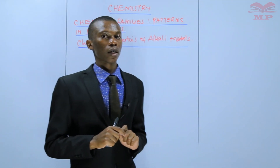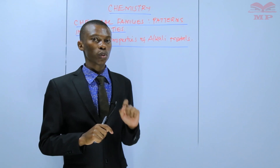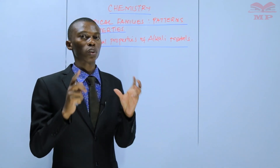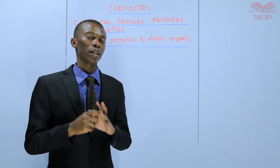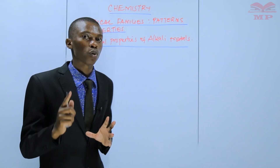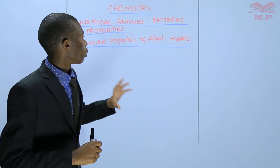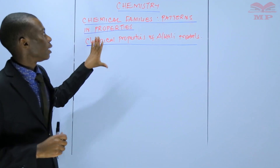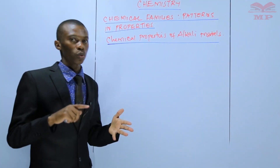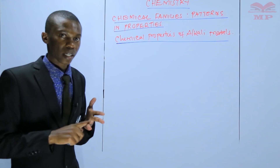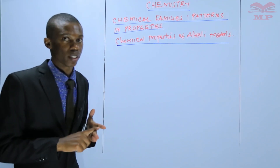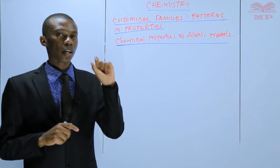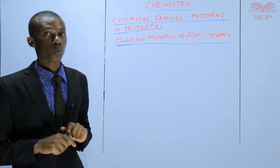In this lesson, by the end of this lesson, you should be able to write chemical equations for what happens when alkali metals are exposed to air. When you look at the chemical properties of alkali metals, there are reactions of alkali metals with oxygen, with water, and with chlorine. In this lesson, we will start with the reaction of alkali metals with oxygen.